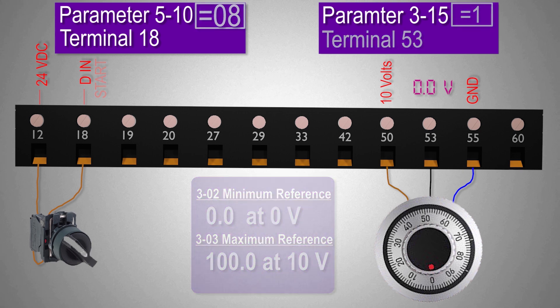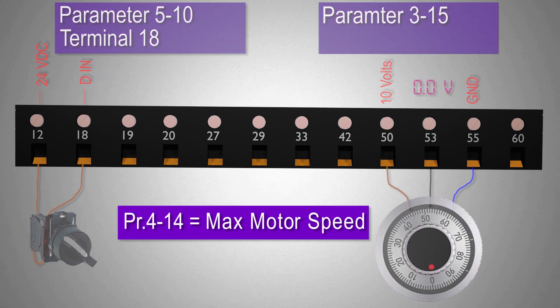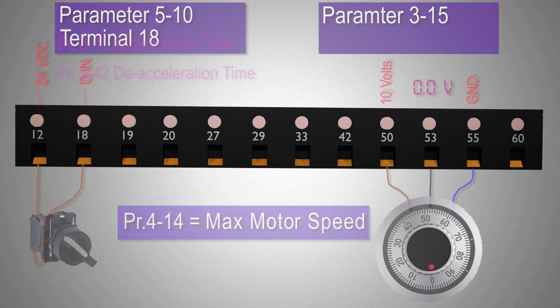Just a side note here, the speed of the motor will not exceed the speed which we have entered in parameter 4-14 which is the maximum speed limit. If we want to run at high speeds we have to increase the speed limit in parameter 4-14.